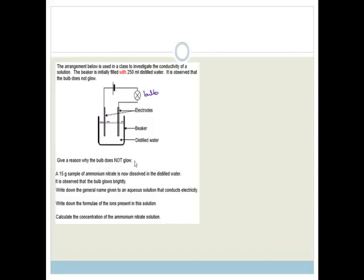Give a reason why the bulb does not glow. Well, they use distilled water. And in order for this to be an electrolyte, you need to have ions. And distilled water has no ions. Therefore it is not an electrolyte. It needs to have ions in order for the electricity to flow.